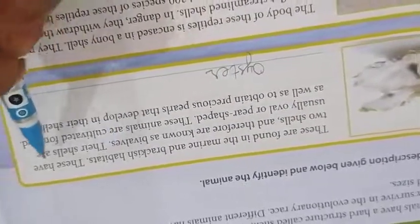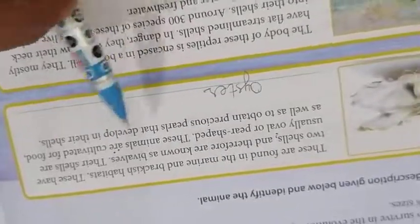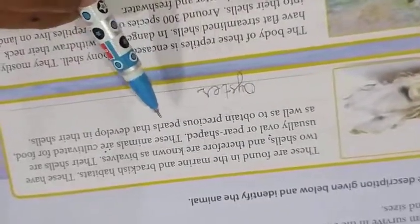First one, these are found in the marine and brackish habitats. These have two shells and therefore are known as bivalves. Because of two shells, two means bi, it is bivalves. Their shells are usually oval or pear shaped. See it is an oval shape. These animals are cultivated for food as well as to obtain precious pearls they develop in the shells. So it is oyster.